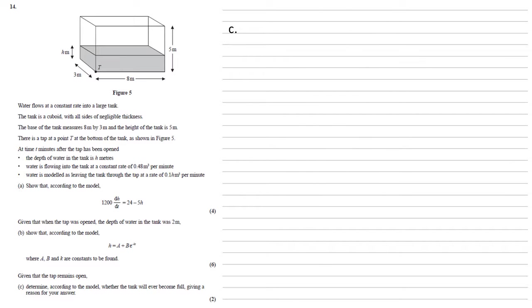Given that the tap remains open, for part c we need to determine, according to the model, whether the tank will ever become full and give a reason for our answer. So here's our model. h equals 24 over 5 minus 14 over 5 times e to the minus t over 240.